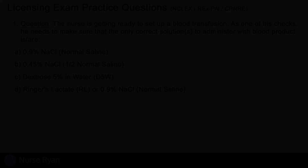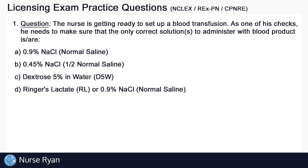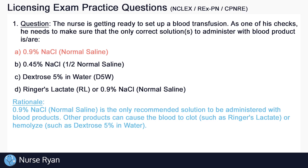Starting off with question number one, the nurse is getting ready to set up a blood transfusion. As one of his checks, he needs to make sure that the only correct solution or solutions to administer with blood products are — the answer here is A, 0.9% sodium chloride or NaCl, which is also called normal saline.